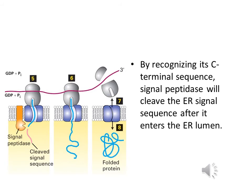As polypeptide synthesis is about to complete, the C-terminal sequence of the polypeptide is recognized by a signal peptidase in the endoplasmic reticulum, which cleaves the ER signal sequence after it enters the endoplasmic reticulum lumen.